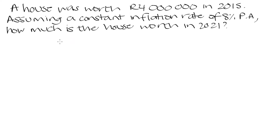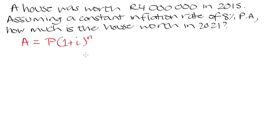Let's start by writing down our compound interest formula: the amount accumulated after some period of time is equal to our principal — the initial amount — multiplied by (1 + i) to the power of n, where n is the number of years. Normally i represents the interest rate, but in this case our i is going to represent our inflation rate. If any of this is unfamiliar, I suggest you look back at our videos on compound interest where we go over this formula in more detail.